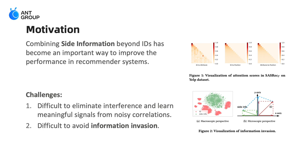As shown in Figure 1, ID-to-attribute correlations are strong, while ID-to-position and attribute-to-position correlations are relatively weak. Second, it's difficult to avoid information invasion, which means early fusion of side information may instead impair the performance.